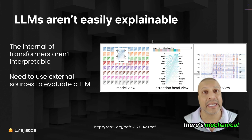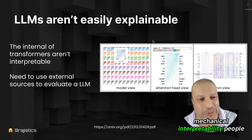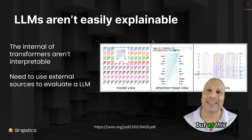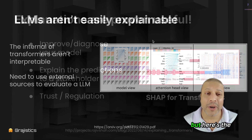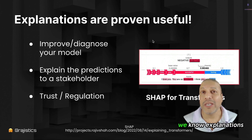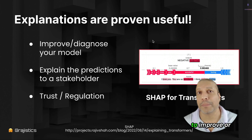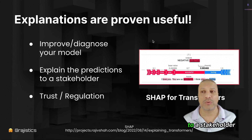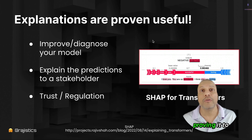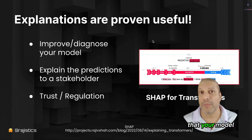There are tools out there — there are mechanical interpretability researchers. But at this point, we don't have an easy way to just dive inside a transformer, a large language model, to understand how they're working. But here's the thing: we know explanations are really useful, whether you're trying to improve or diagnose the model, explain your predictions to a stakeholder, or thinking about trust and regulation — proving to a larger audience that your model is robust.